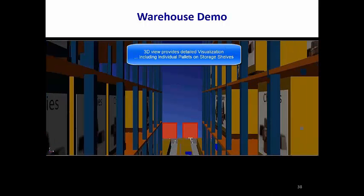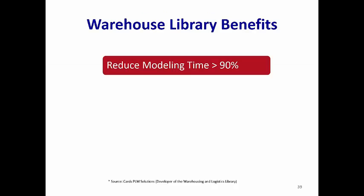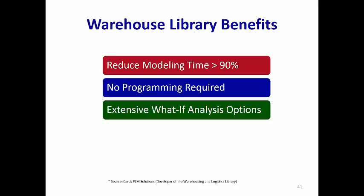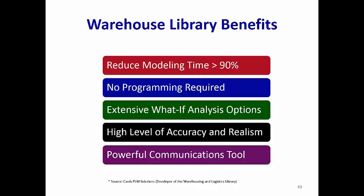This is a crane's eye view as it moves in an aisle. As you can see, 3D is very detailed, down to the cartons stored on individual shelves, moving on the conveyor or being transported by forklifts. The benefits of using the warehousing and logistics library include reduced modeling time of warehouse and logistics operations by more than 90%—you can build warehouse models in minutes or hours instead of days, with no programming knowledge required. PlantSim and the library include extensive what-if analysis options, a high level of accuracy and realism, and detailed 2D and 3D visualizations that provide a powerful communications tool.